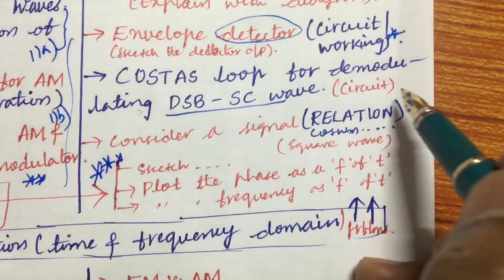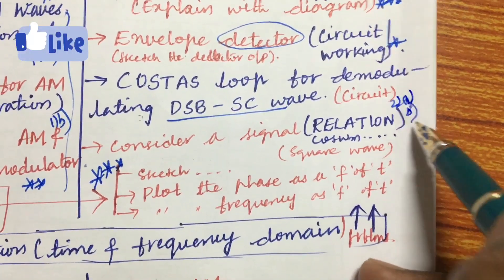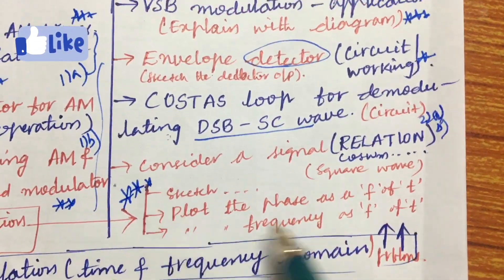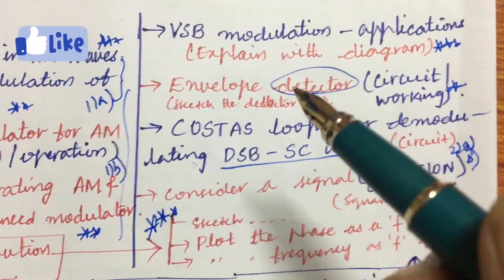Dear students, from this part we can get 2A as well as 2B, and do not expect direct 15 marks. If such question comes you will be getting for 15 marks, otherwise you will be getting A and B combination.